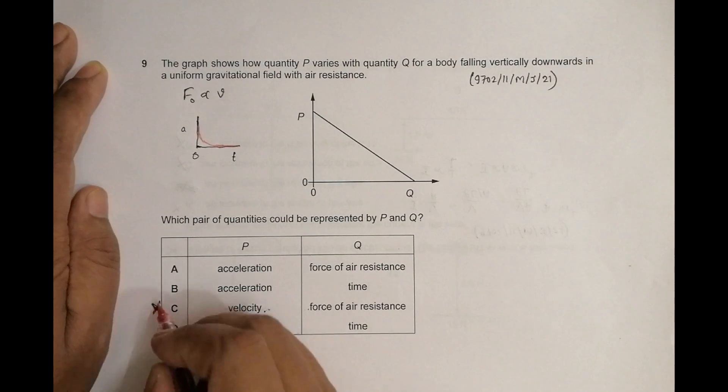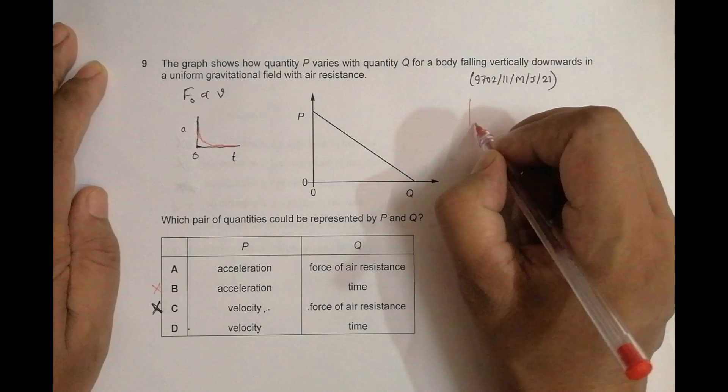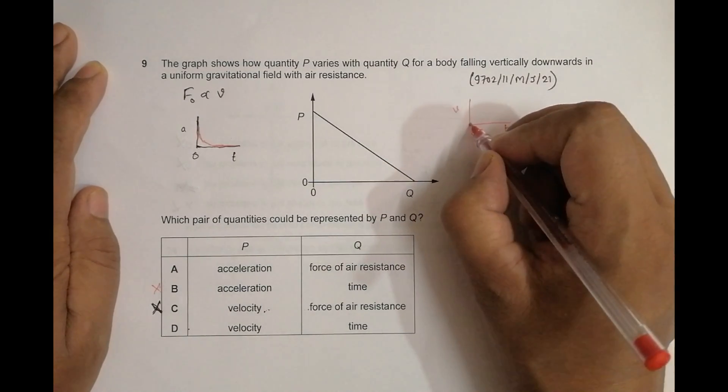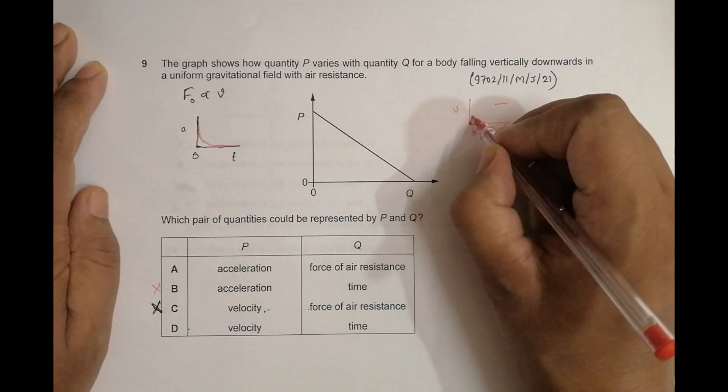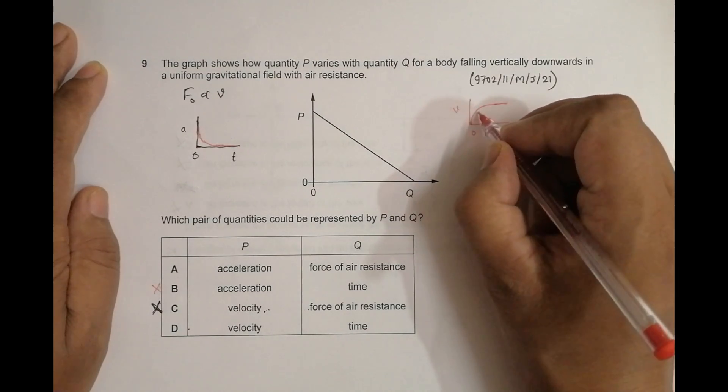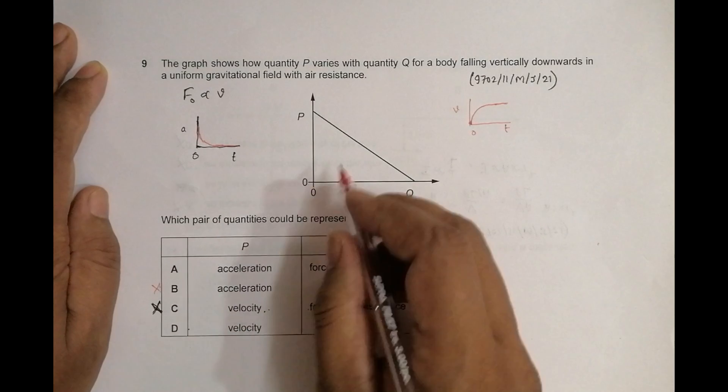In case of the v-t graph, it ultimately reaches terminal velocity. It starts from zero, initially the rate of increase is high, later it becomes less and less until v is constant. So again, this is incorrect.